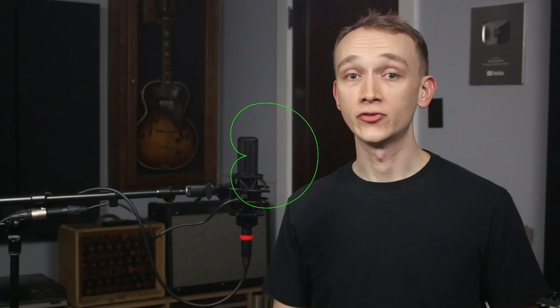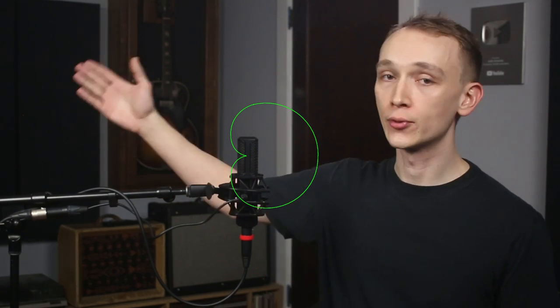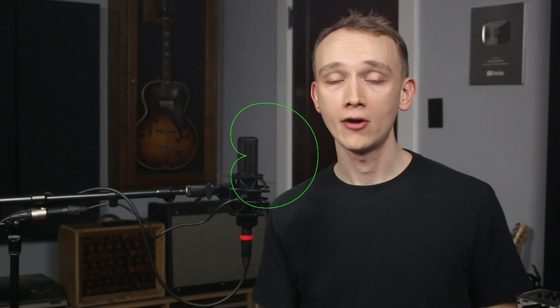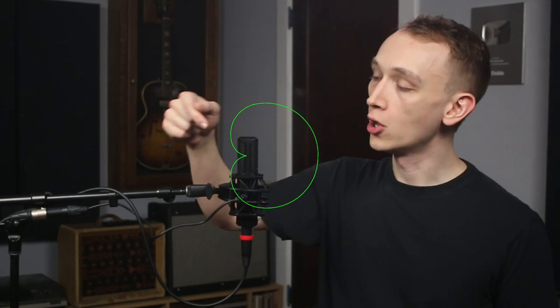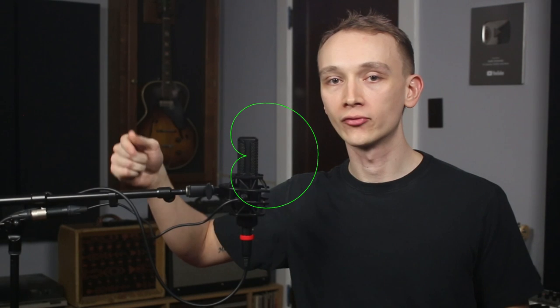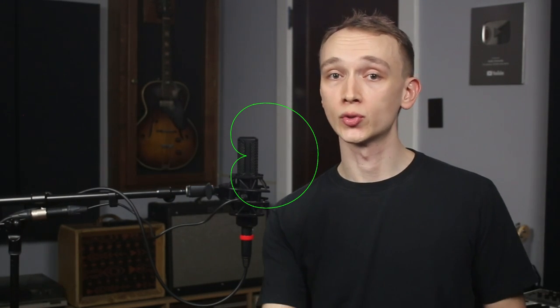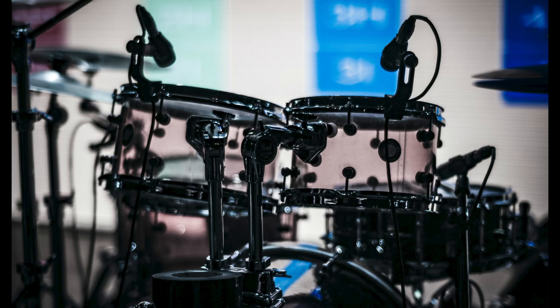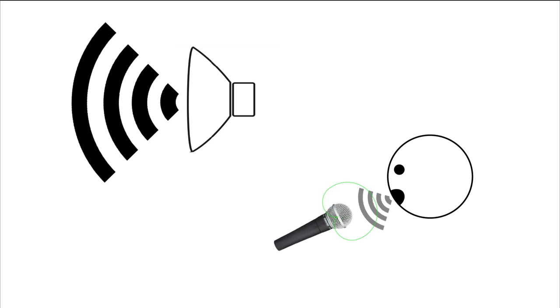Cardioid microphones and other directional mics are really useful when there are other instruments or noise sources in the same room. If there's a noisy fan in the corner that you can't turn off while recording, it might make sense to point the null or rejection point of the microphone toward that noise source. Cardioid mics are also really useful in live performances when instruments are in close proximity and you need to capture only a particular instrument. They also help maximize gain before feedback in live sound by rejecting sounds from the speakers.